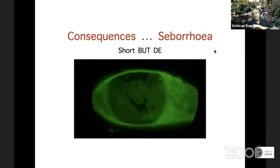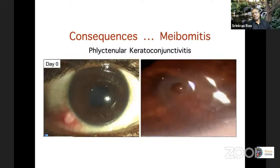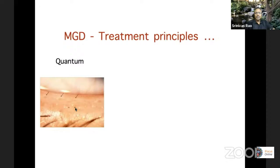The consequences: if you have seborrhea or excessive oil, it contaminates the corneal surface, does not allow the tears to stay, and you get a very short BUT. On the other hand, if you have very little oil, there is excessive evaporation, the tear film doesn't stay stable — you get an evaporative dry eye with extensive corneal surface staining. When you get a lot of inflammation from the oil secreting from the lids, you can get conjunctivitis — phlyctenular conjunctivitis — and keratoconjunctivitis when these changes migrate onto the cornea. Because of the excessive inflammation, if you don't treat it in time, there's a lot of collagenase release and you can even end up with a perforation.